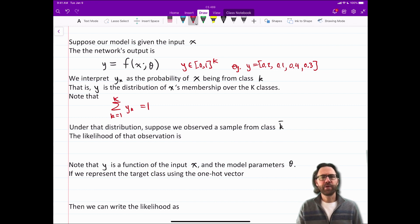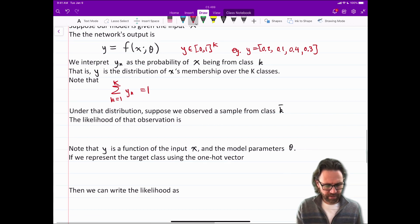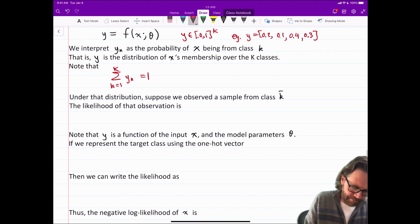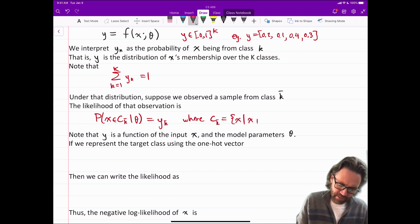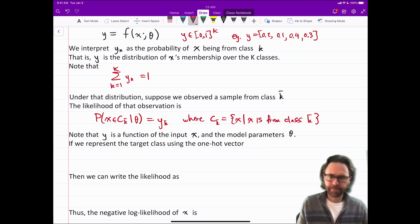So Y, the output of the network is actually a distribution over the different classes. The probability that the input belongs to each class. Under that distribution, suppose we observed a sample from class K. So the likelihood of that observation is probability X is from class C K hat given theta equals Y sub K hat. Where C sub K hat equals the set of inputs X such that X is from class K hat. So C sub K is the set of inputs that belong to class K.